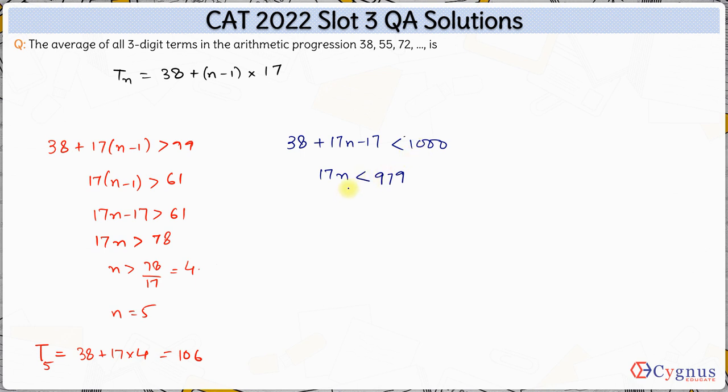So we have n should be less than 979 by 17, so this will come out to be approximately 56 point something. So the value is approximately 56 point 5. So the highest value of n possible is 56.